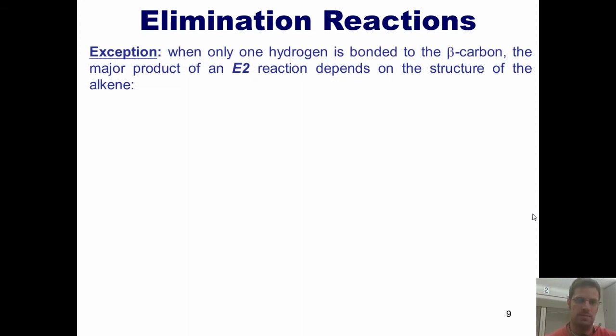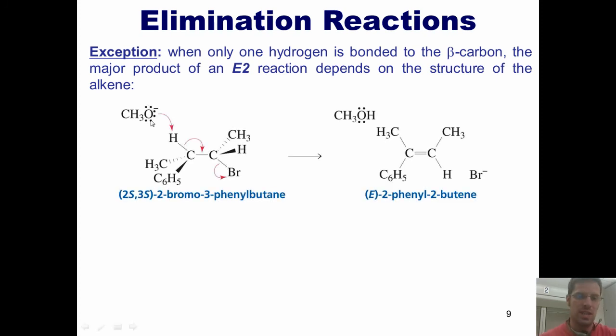There are, of course, exceptions. If you have a circumstance when only one hydrogen is attached to the beta carbon, then the major product of the E2 reaction depends on the structure. Let me show you this example. Here's my leaving group, this bromine. In this particular molecule, you'll notice that the carbon next door only has one hydrogen on it, right here. Now, as it turns out, the only way you can do an E2 reaction is if this hydrogen is momentarily trans and in the same plane as this leaving group. Because of that fact, when this base comes in, strips that hydrogen, and thrusts the electrons down to kick off the bromide, I end up putting the two methyl groups on the same side of each other, giving me the E product.